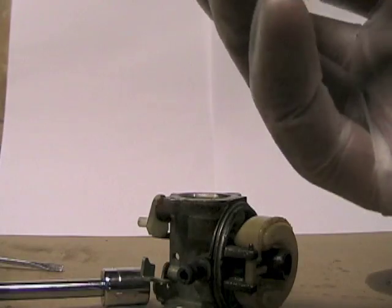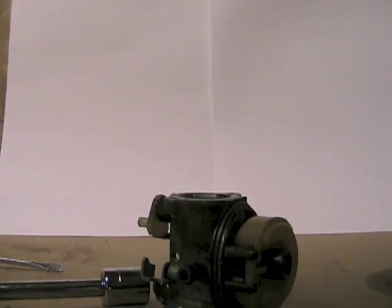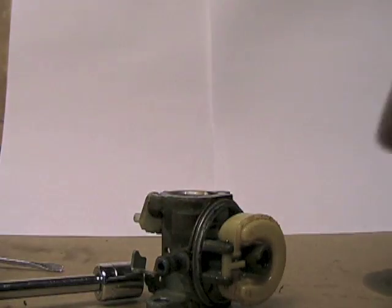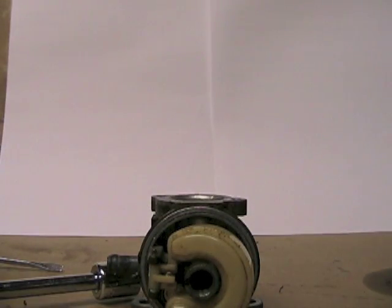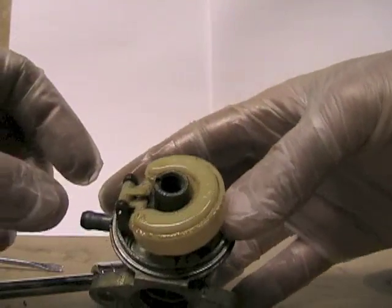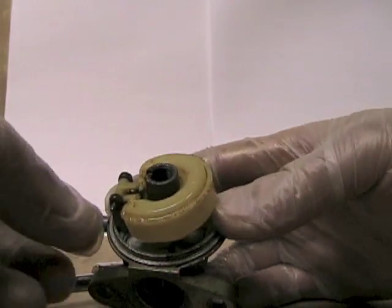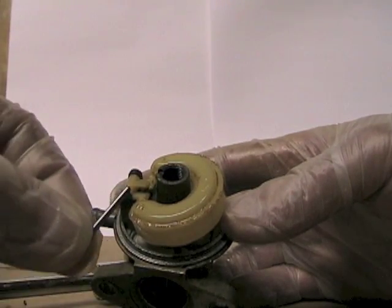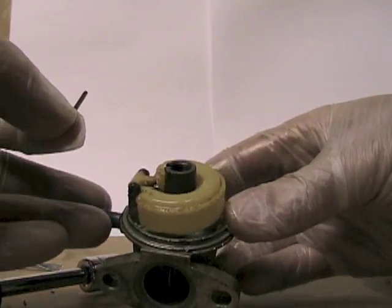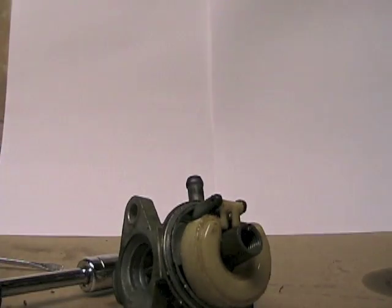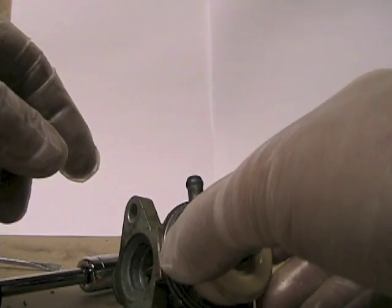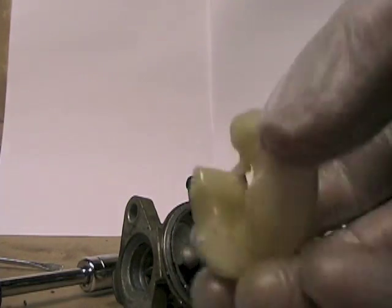All right, now onto the float. Take the float pin out, that just slides out. Make sure that you put your parts in a place where they aren't going to float away. I've got a kind of paper plate over here that I'm putting stuff on. Slide the float out and the pin will come with it. There's the pin and the float, we'll put that off to the side.